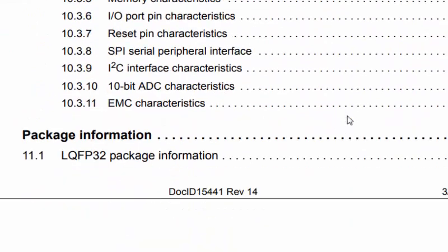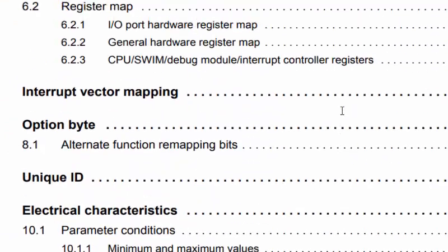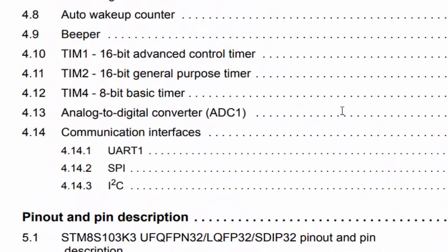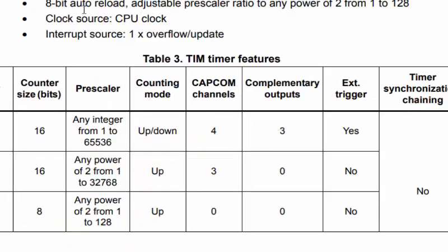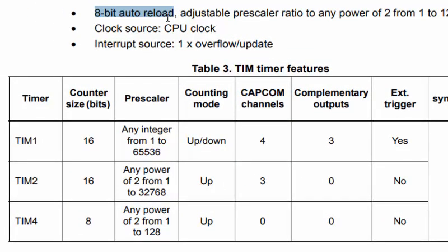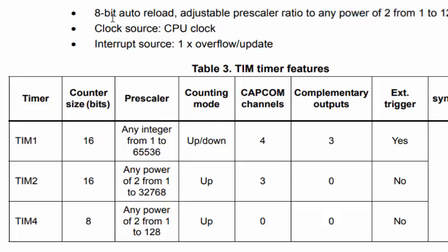If we scroll down in the datasheet and jump to the timer section, we see that this microcontroller has Timer 1 (16-bit advanced control timer), Timer 2, and Timer 4. Timer 4 is the 8-bit basic timer. It has an 8-bit auto-reload value and an adjustable prescaler ratio from 1 to 128 (powers of 2). This tells us that we have at least two registers: one for the auto-reload value and one for the prescaler.